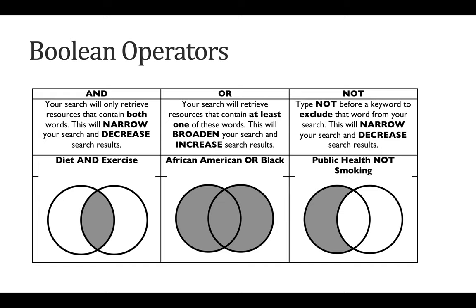Before I show you how to create a search strategy with those keywords, I want to remind you of the different Boolean operators available to you in the databases. These are three tools you can use for a more precise search strategy: AND, OR, and NOT. AND is most commonly used — it limits your results so they're more specific, because each result must include all of the search terms you've joined with AND.